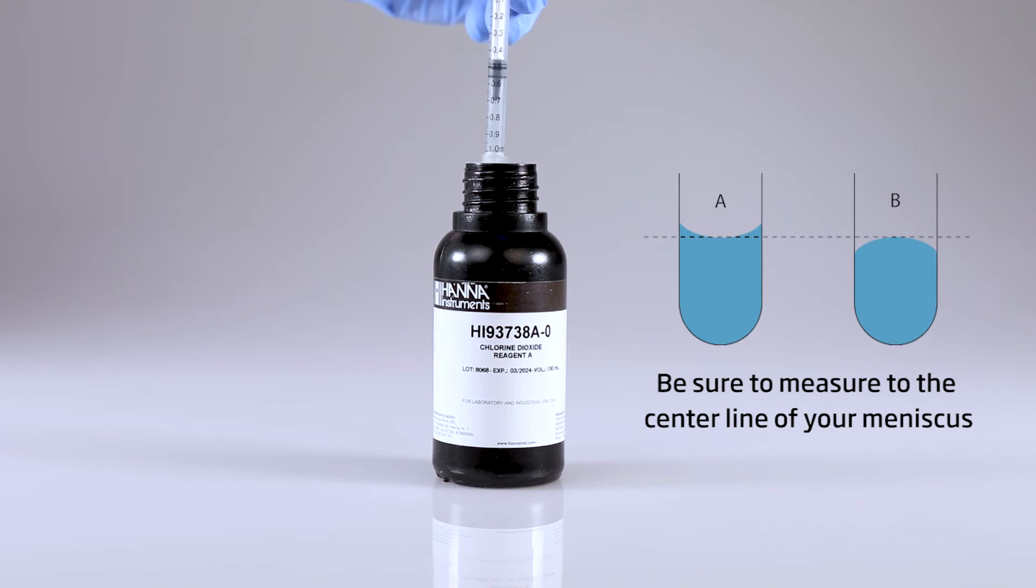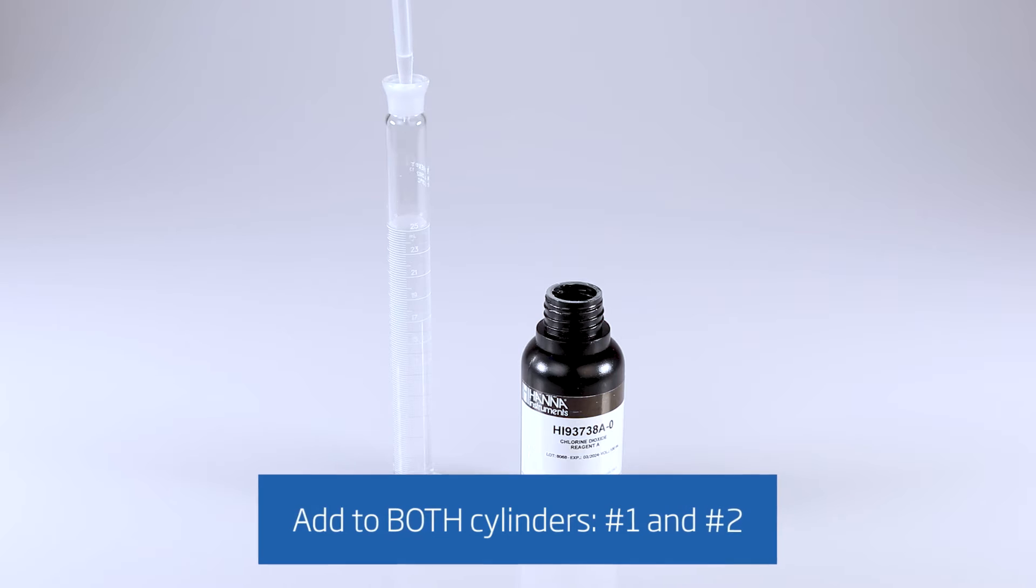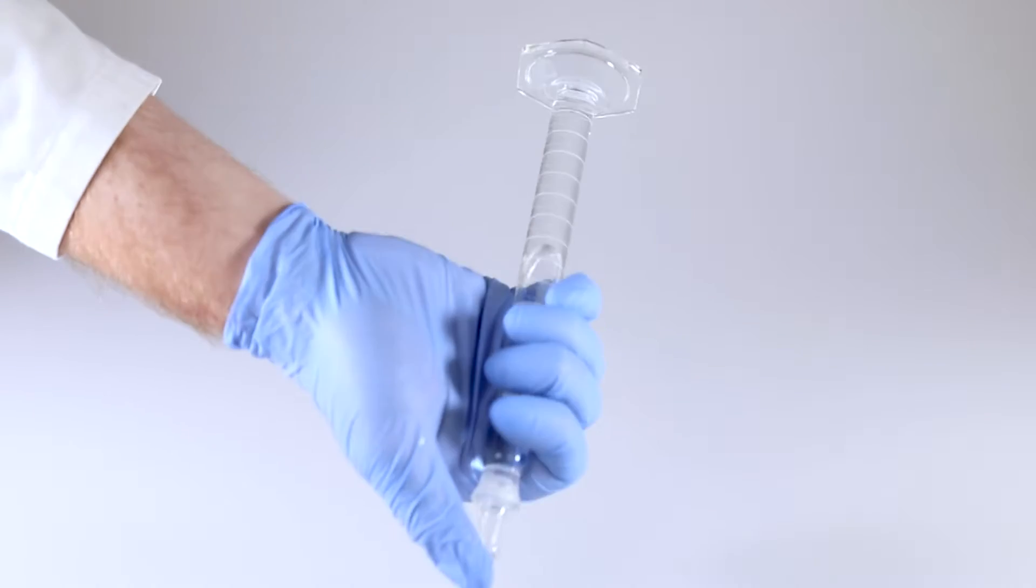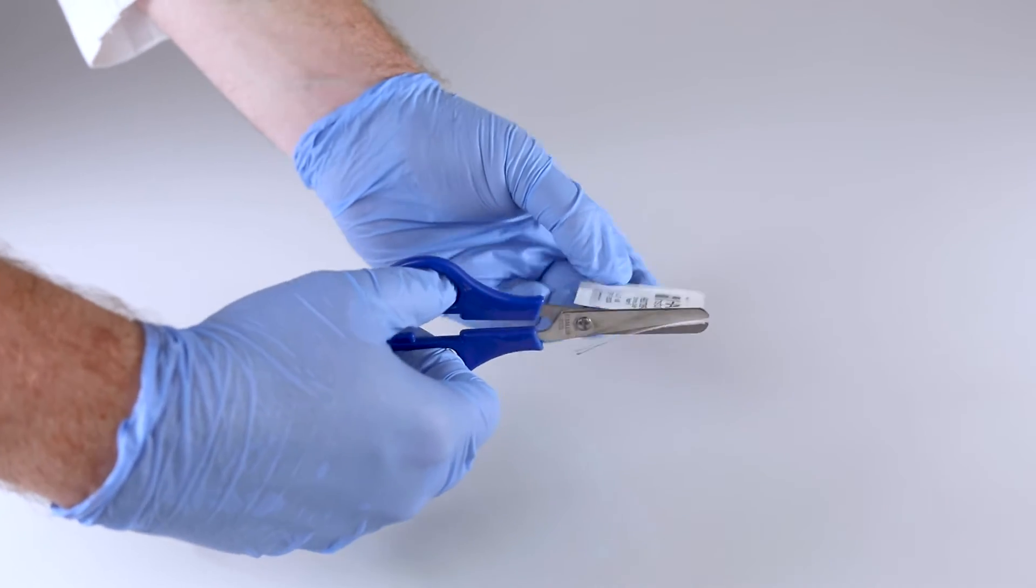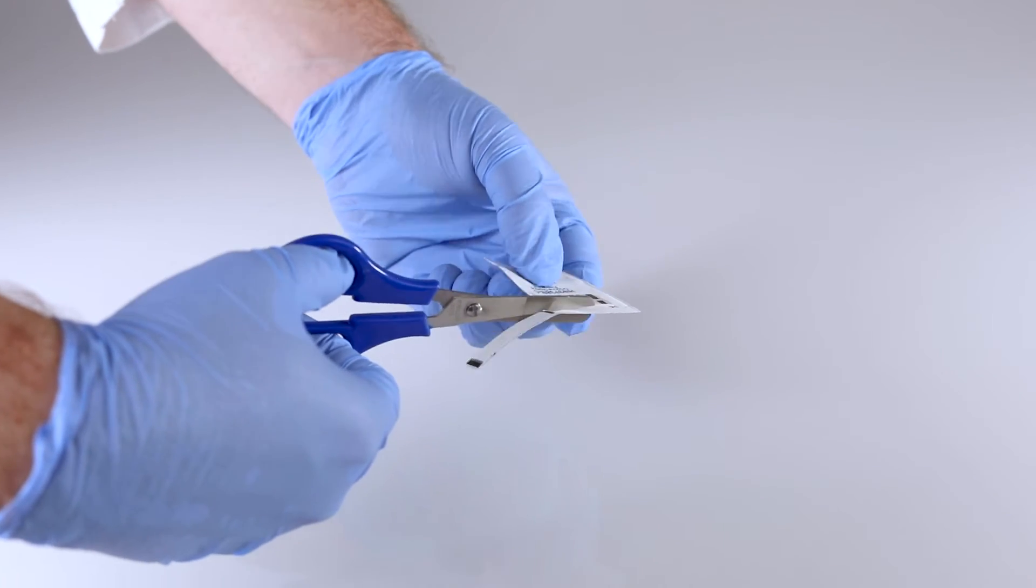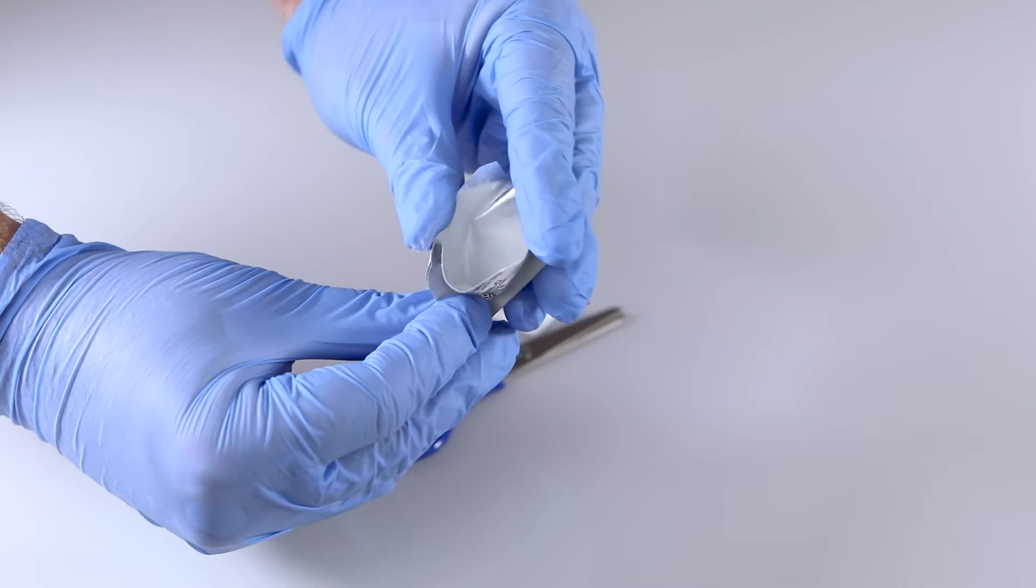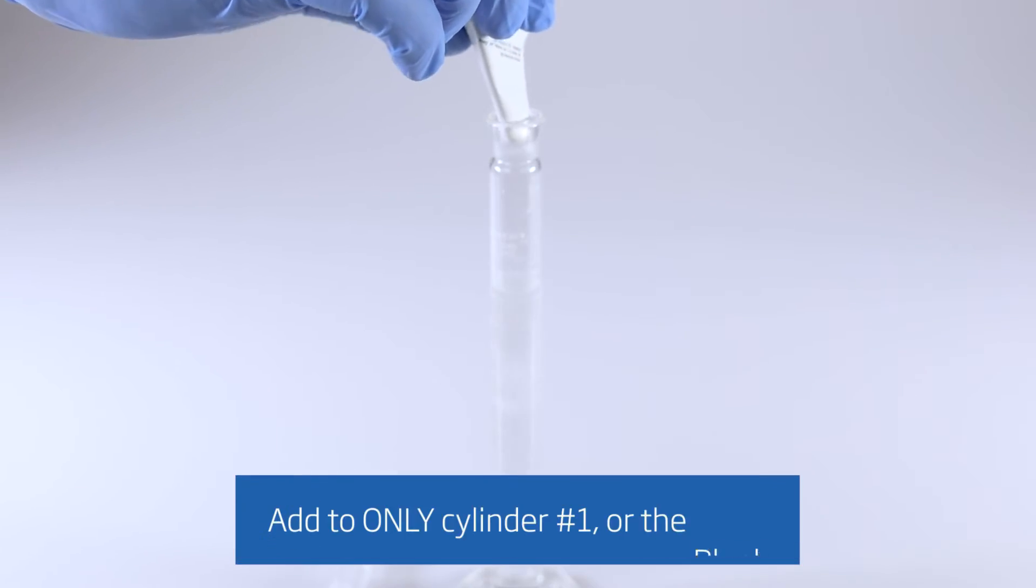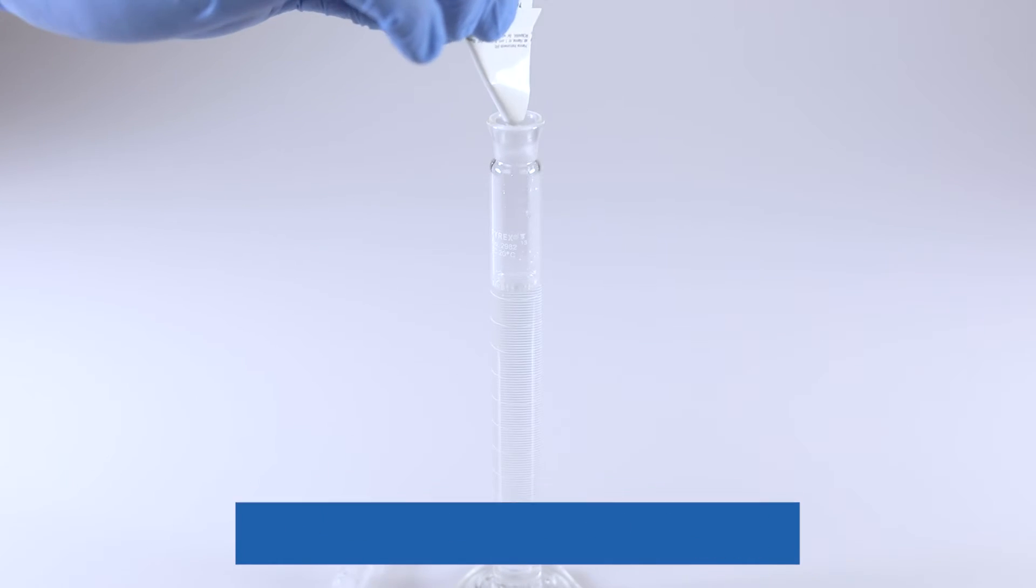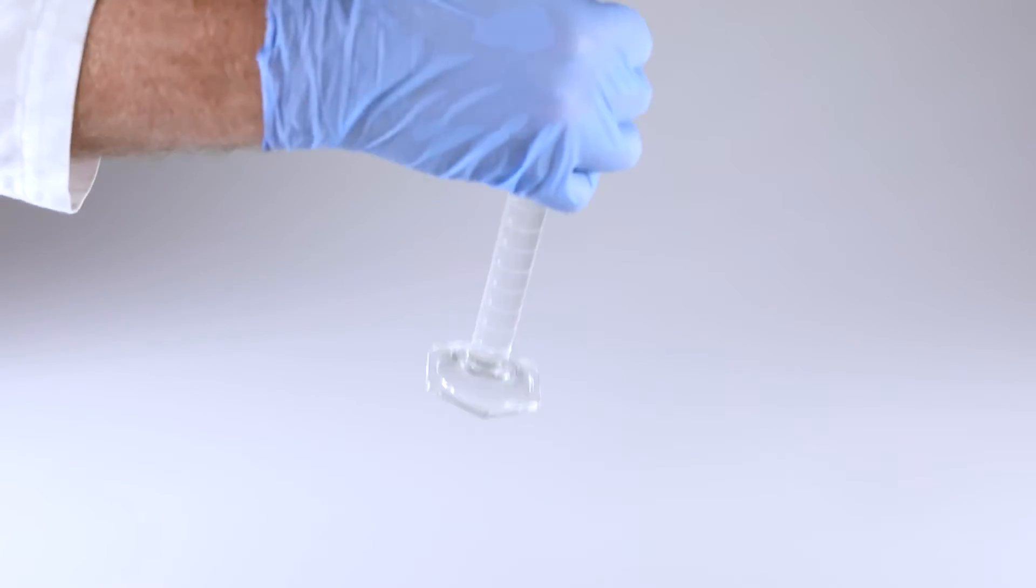Using a one milliliter syringe, add 0.5 milliliters of reagent A to each cylinder. Cap the cylinders and invert several times to mix. Now, take one packet of reagent B and carefully cut along the dotted line using your provided scissors. Pinch the corners of the open packet to form a spout. Add the entire content of the packet into one of the two cylinders, cylinder number one or the blank cylinder. Cap the cylinder and invert several times to mix.